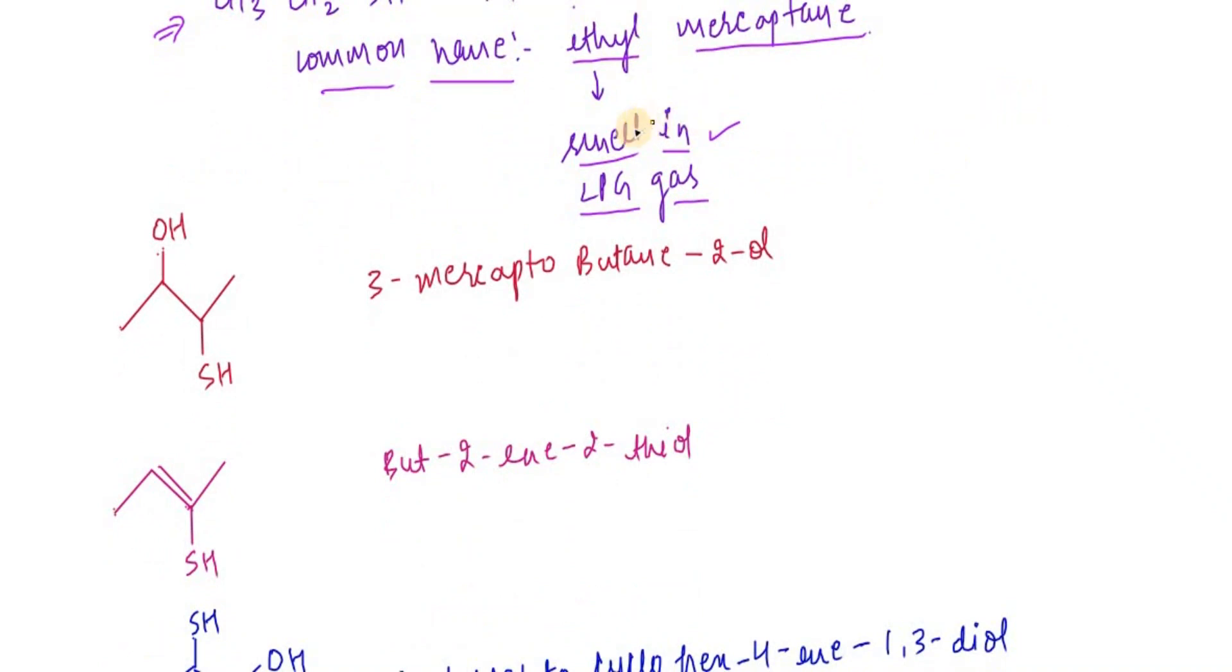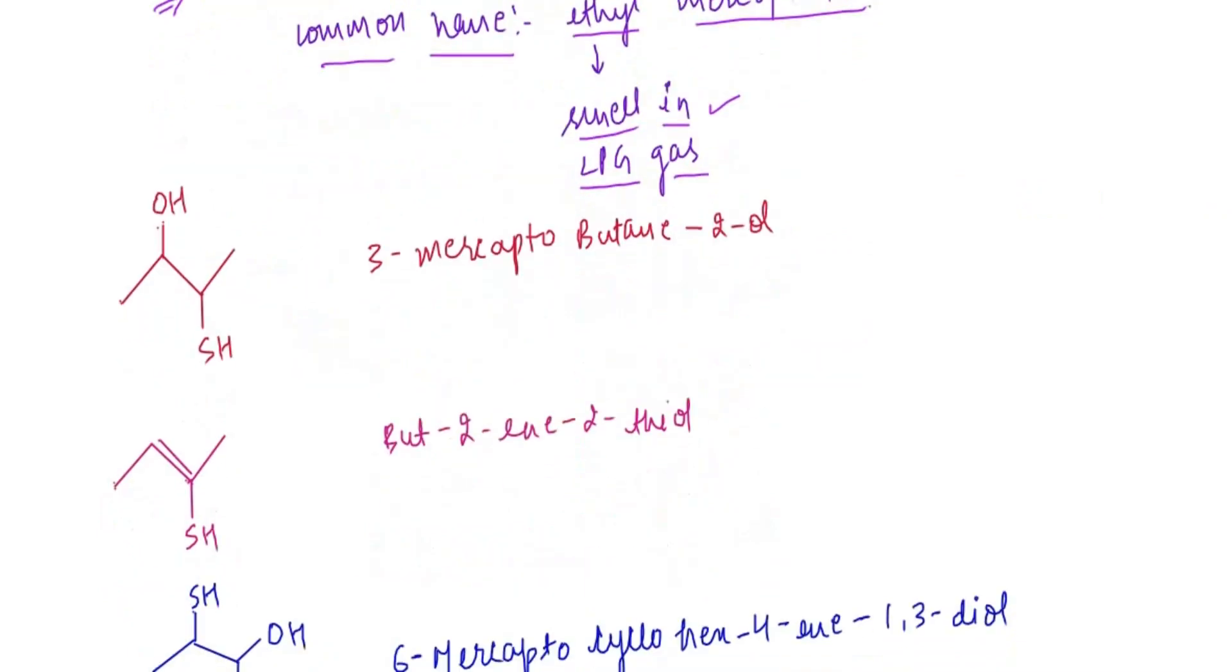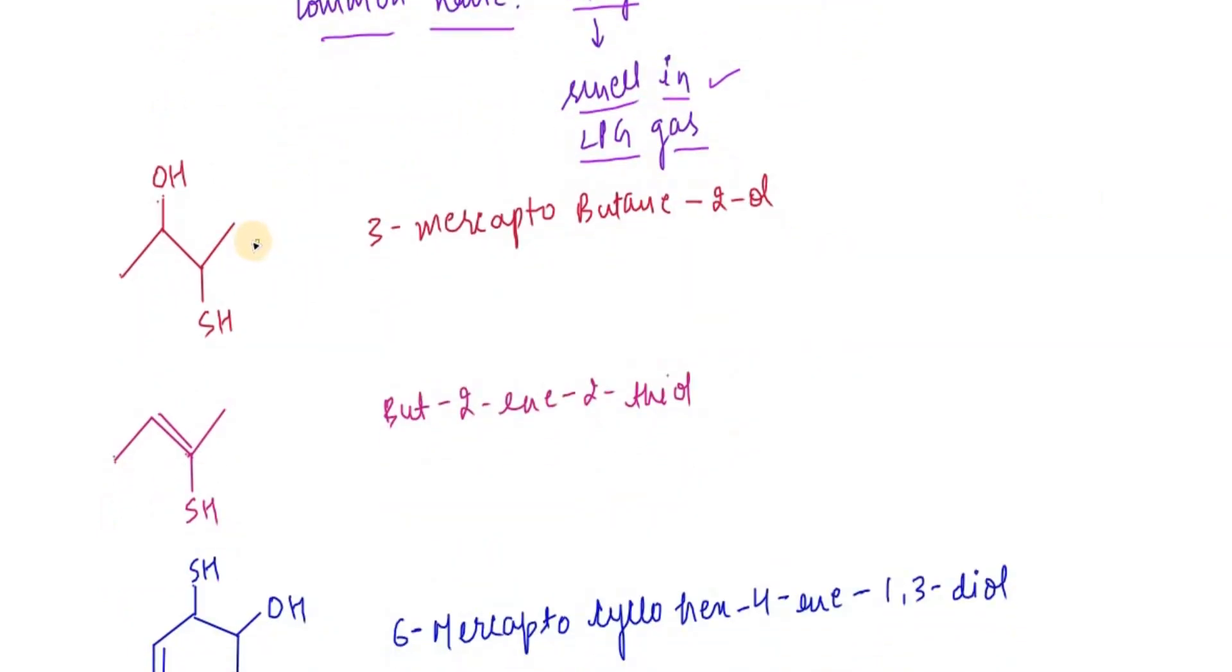Now how do we name ethyl thioalcohol? If you see the name, we know the priority - the priority of alcohol is more than compared to thiol in the principal functional group comparison. So 1, 2, 3 and 4, so it is 3-mercapto.